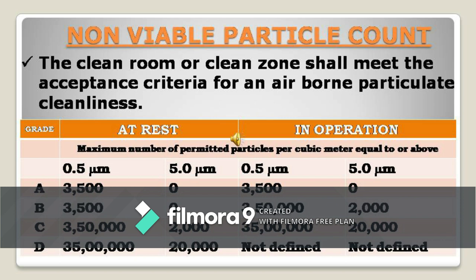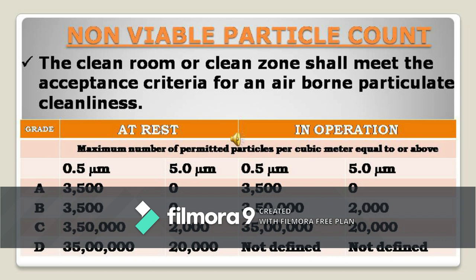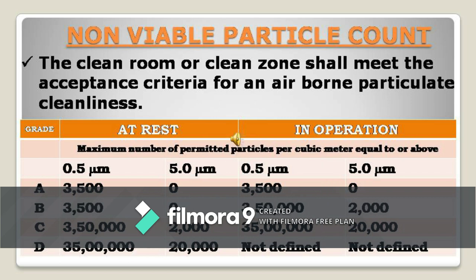Next, we perform the non-viable airborne particle count test. You need a particle counter for this, and it should be duly calibrated with a national or international traceability certificate — this is mandatory for master equipment. For the number of locations and acceptance criteria, we use a stringent combination of ISO, EU, and WHO GMP guidelines. This table shows the criteria for at rest and in operation for all grades.